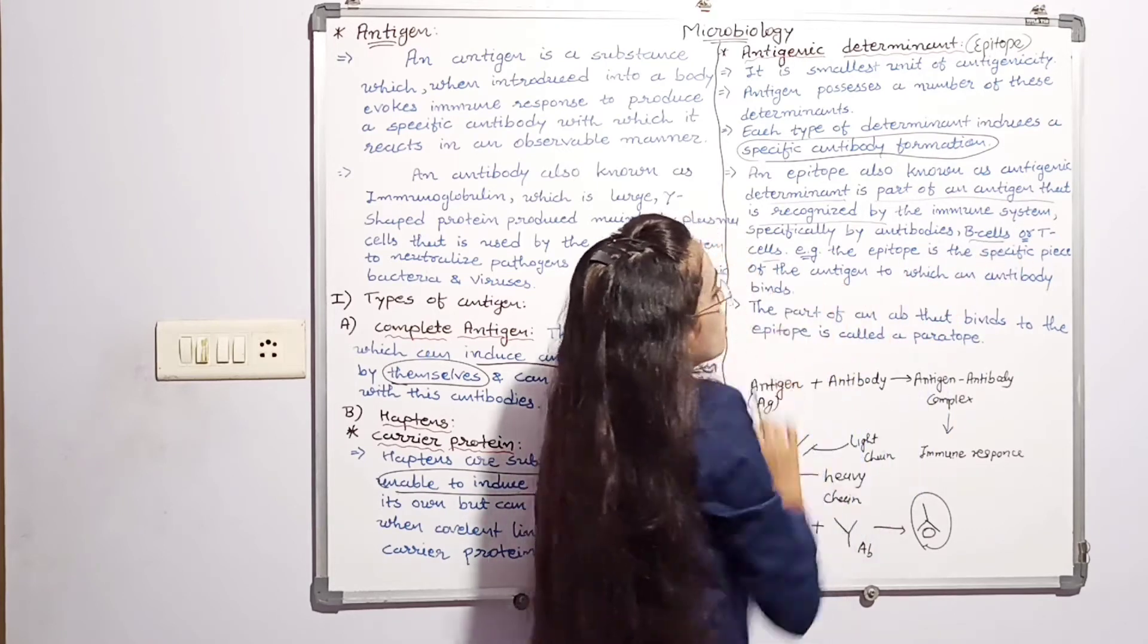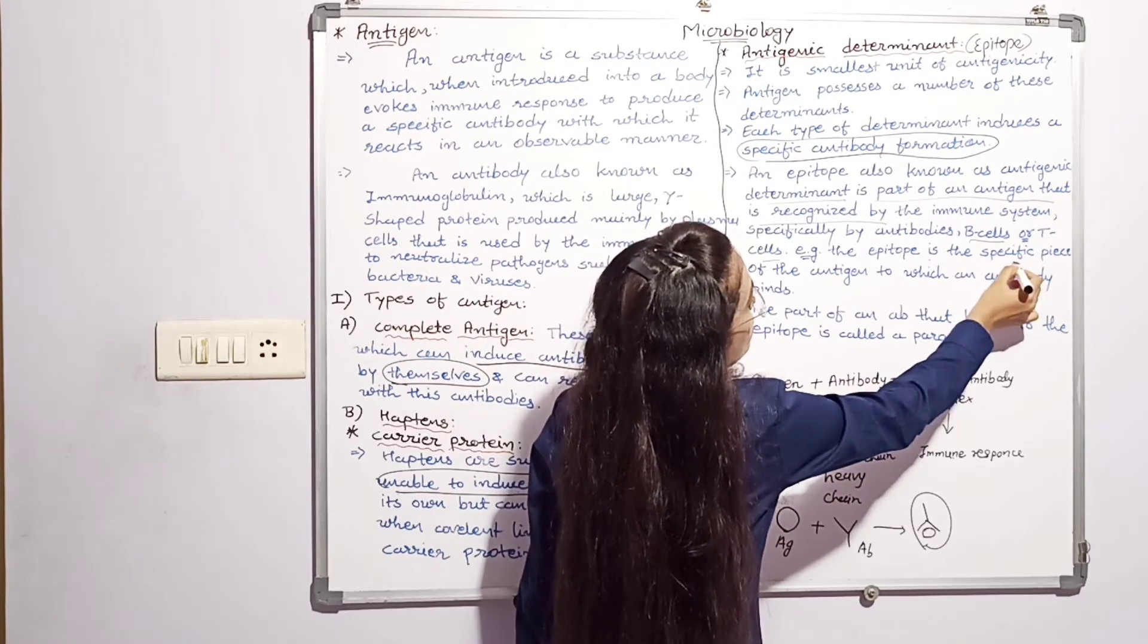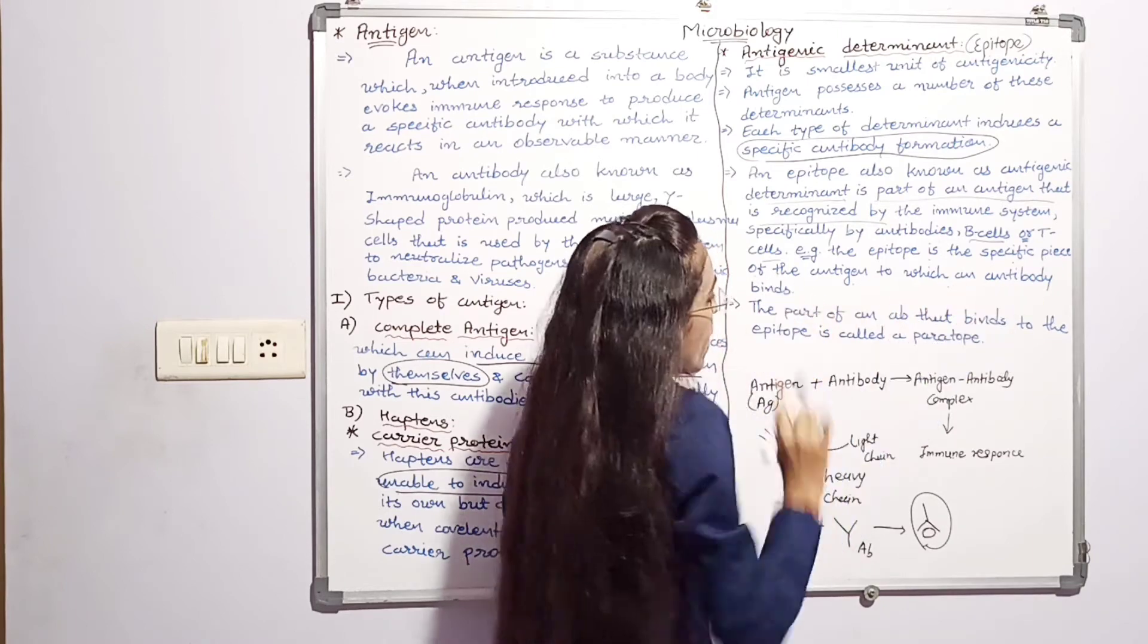B-cell or T-cell. For example, the epitope is a specific piece of the antigen to which an antibody binds.